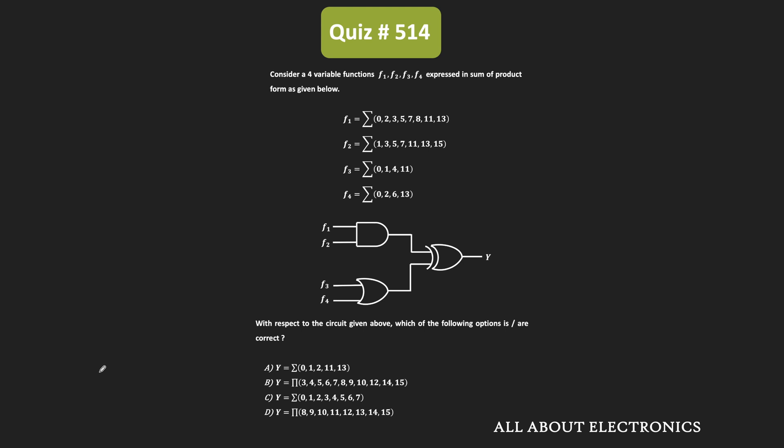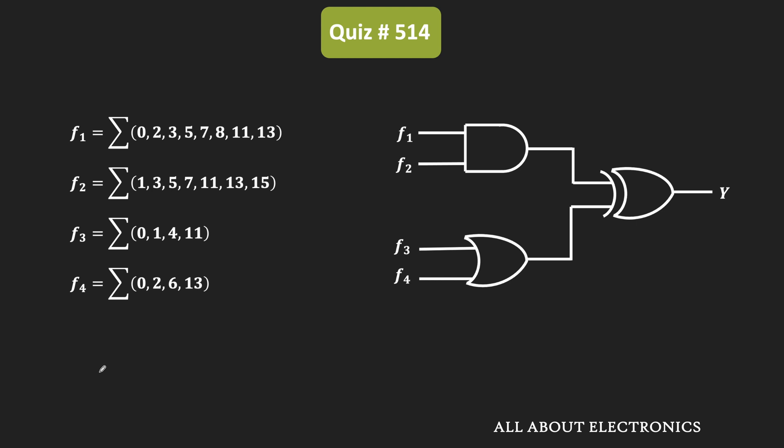So as you can see, these four functions are passed through some logic circuit and the output of this logic circuit is equal to y. So here, we've been asked to find the expression for this output y. So let us find that. So here, these are the four given functions and these four functions are applied to the given logic circuit.